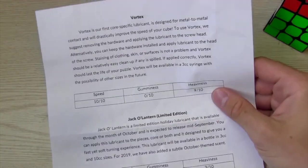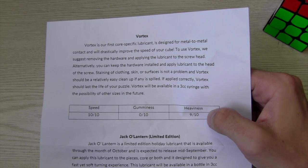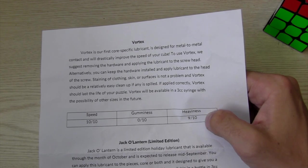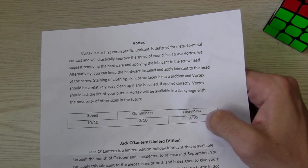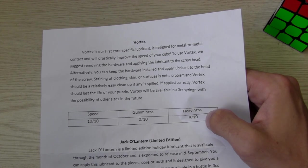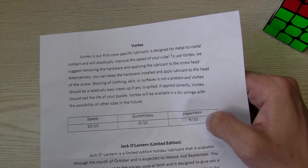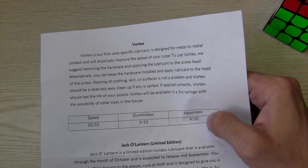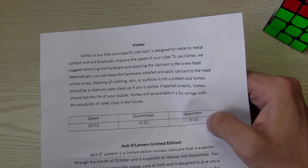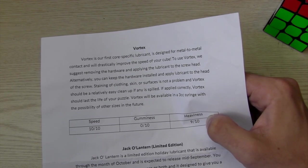Let's look about this. So, Vortex is our first core-specific lubricant and is designed for metal-to-metal contact and will drastically improve the speed of your cube. To use Vortex, we suggest removing the hardware and applying the lubricant to the screw head. Alternatively, you can just keep the hardware installed and add lubricant to the head of the screw. Staining of clothing, skin, or surfaces is not a problem with Vortex. Should be relatively easy to clean up if any is spilled. If applied correctly, Vortex should last the life of the puzzle. So, Vortex will be available in 3cc syringe with the possibility of other sizes in the future.